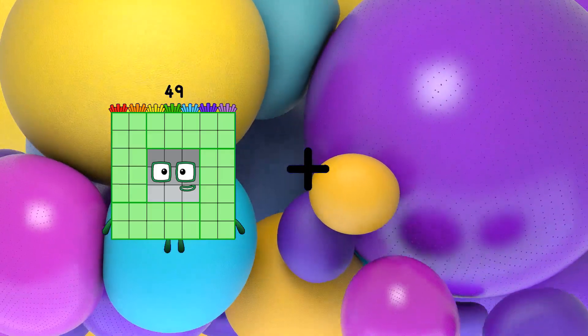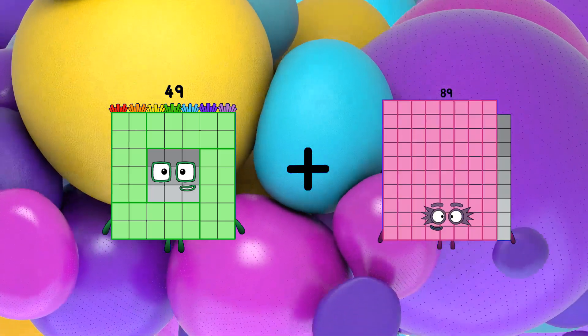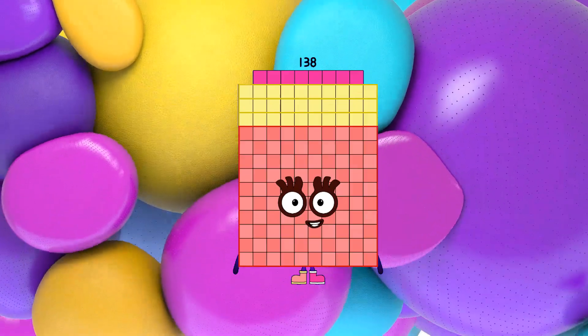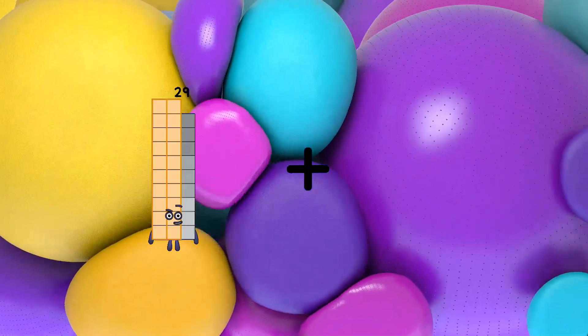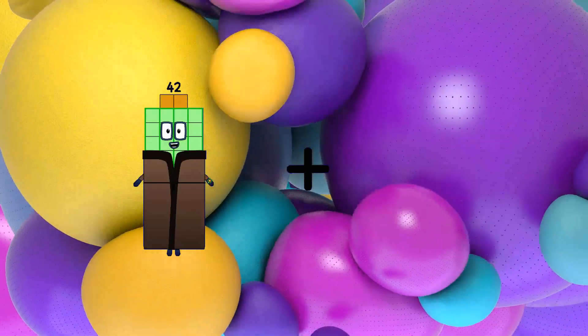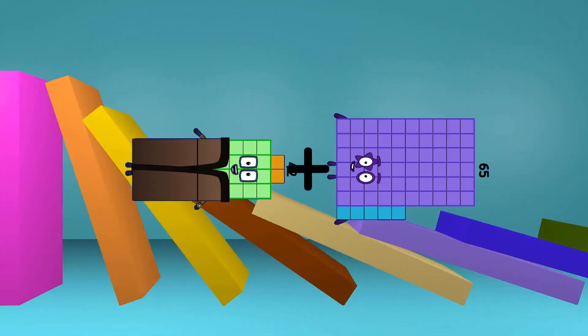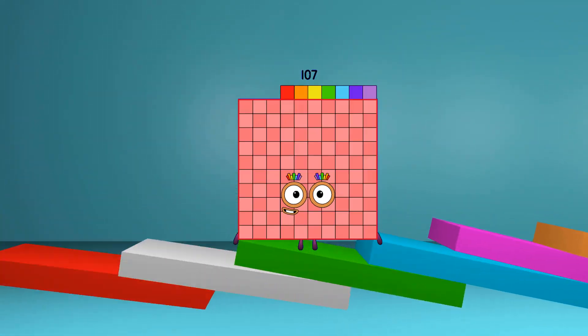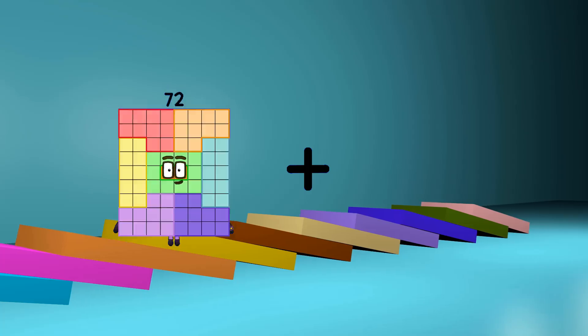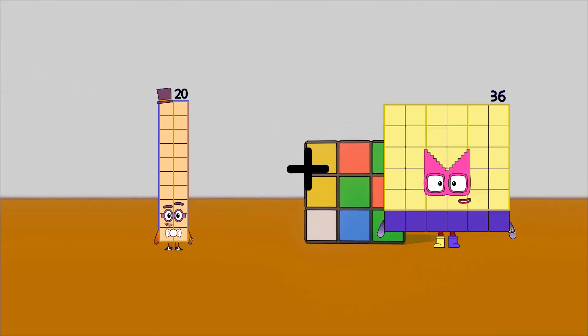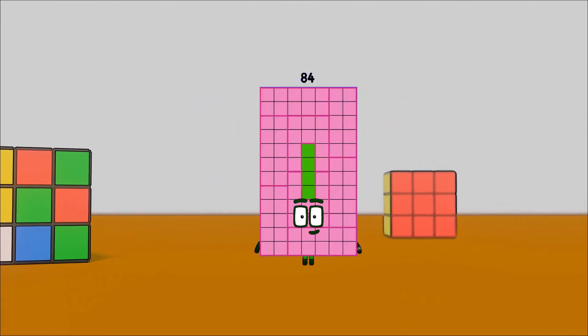49 plus 89 equals 138. 42 plus 65 equals 107. 20 plus 64 equals 84.